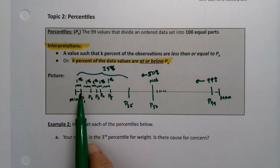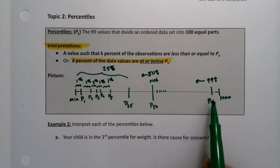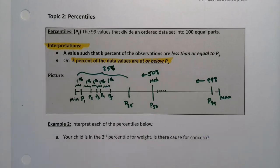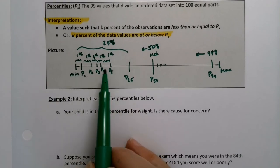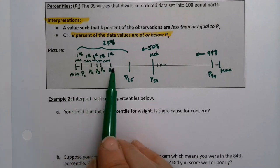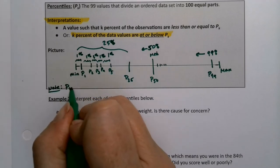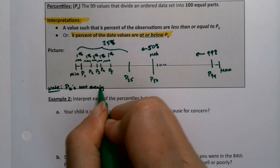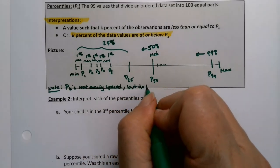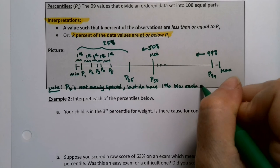There are 99 values to separate your data into 100 pieces — so 1% here, 1% here, 1% here, all the way up. P99 is the last percentile; 99% of the data is at or below that value. Notice these are not all equally spaced. It's just that the percentage is equal — there's always 1% between each one, but they're not evenly spaced. That 1% between each one is what makes it a percentile.